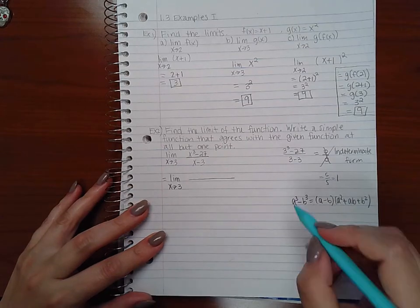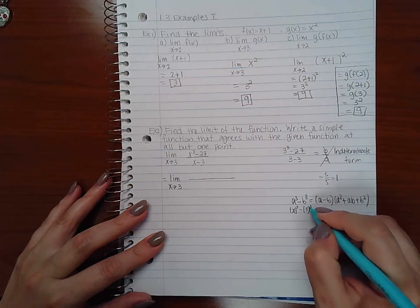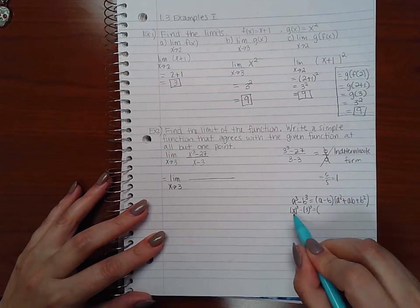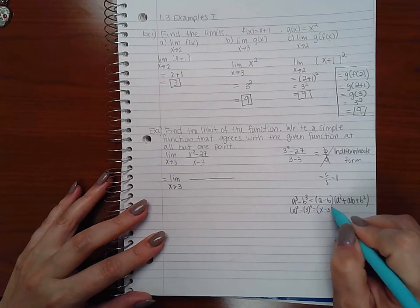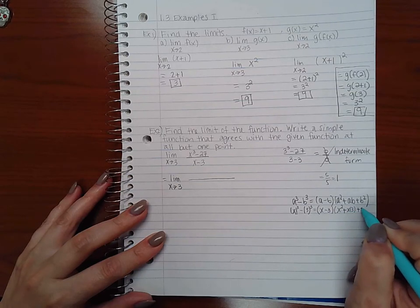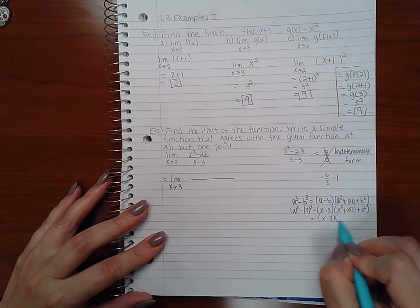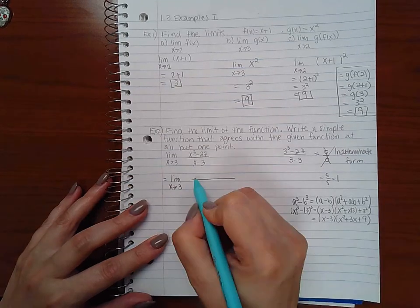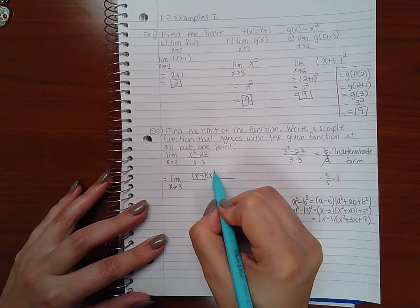So in my case x is being cubed for the first term and three is being cubed for the second term, so all of my a's will become x's and all of my b's will become threes. So I end up with x minus three, x squared plus three x plus nine. So that's how you factor x cubed minus 27.